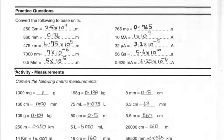Continuing looking at converting to base units. Some measurements: 0.5 megameters is 5×10^5 meters, 765 milliseconds is 0.765 seconds, 10 mega amps (or mega amperes, amps being short for amperes) is 1×10^7 amps, 32 micro amps is 3.2×10^-5 amps, 56 giga seconds is 5.6×10^10 seconds, and 0.625 milliamps is 6.25×10^-4 amps.